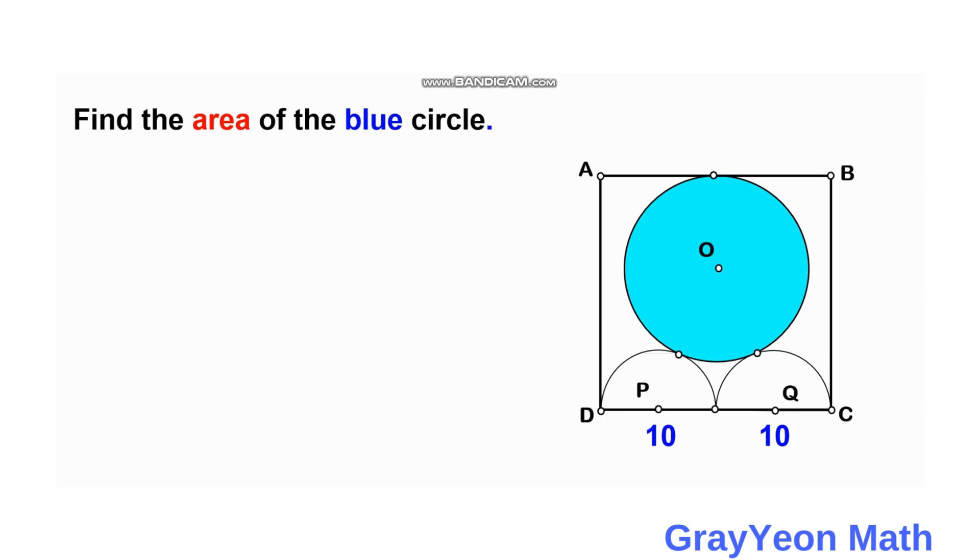Since the circles and semicircles are mutually tangent to each other, we can draw a line from the center of the blue circle point O and